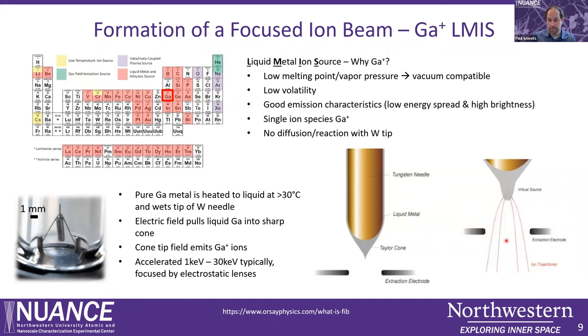The largest advantage gallium has is that when heated to just about room temperature on a tungsten needle, it can form a so-called Taylor cone — a virtual source about 10 to 15 nanometers in diameter. When submitted to an electric field, positively charged gallium ions are emitted towards the sample and accelerated typically from 1 to 30 kV. These gallium ions are focused by electrostatic lenses, not electromagnetic lenses as in an SEM, and then interact with the sample.